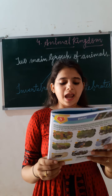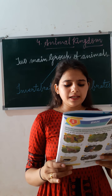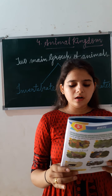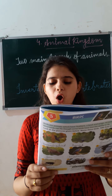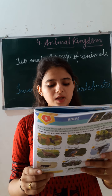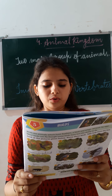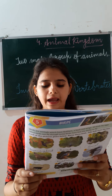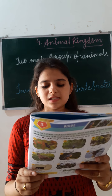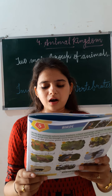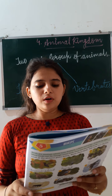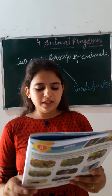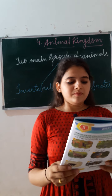Next one — vertebrates. Animals that have a backbone are called vertebrates. For example: human beings, elephant, cheetah, cow, and others.